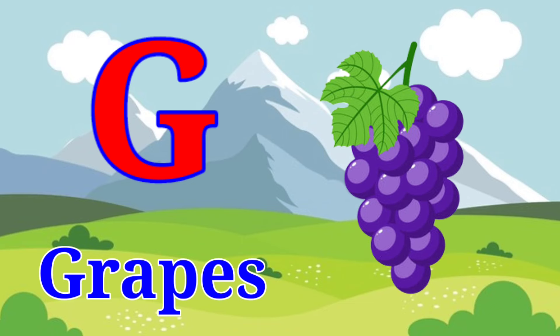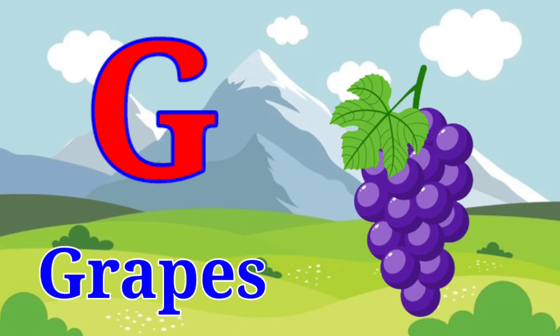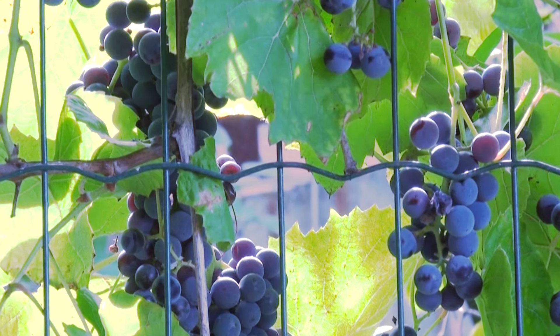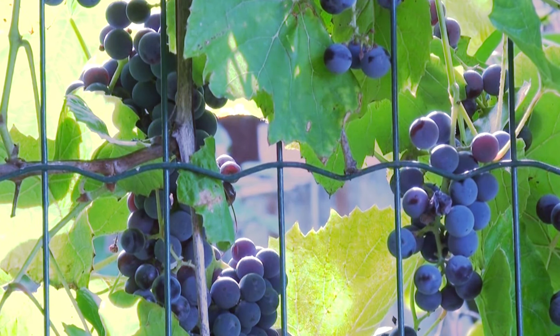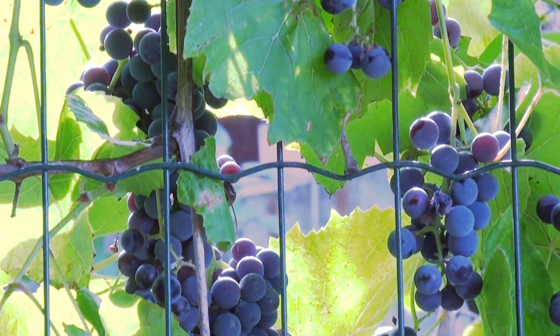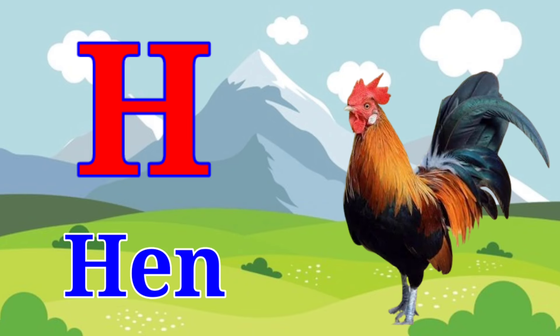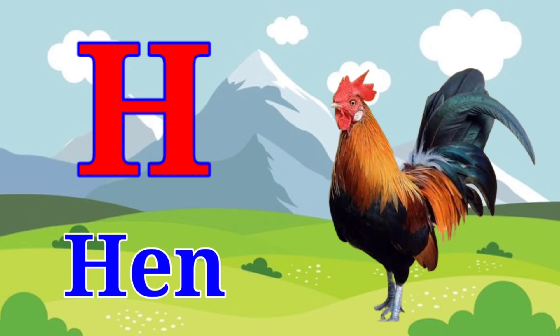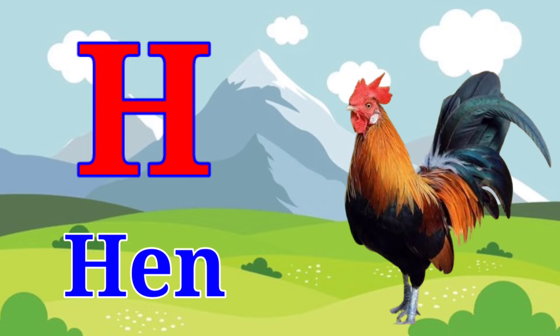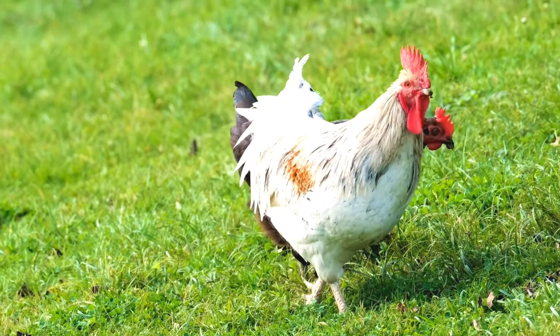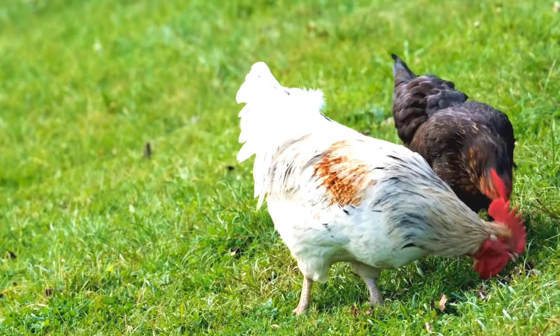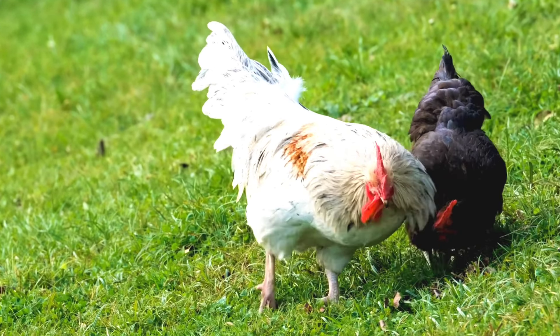G for grapes. Grapes means angoor. H for hen. Hen means murgi.